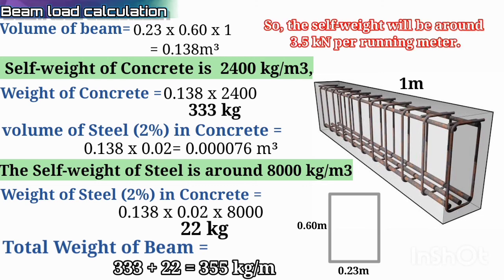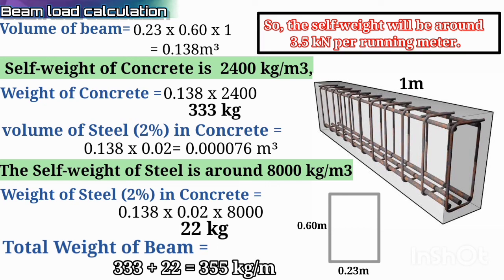So 355 kg per meter — this calculation is done per meter since our design is per meter. Therefore, the self-weight will be around 3.5 kilonewtons per running meter. That's it for today's lecture.